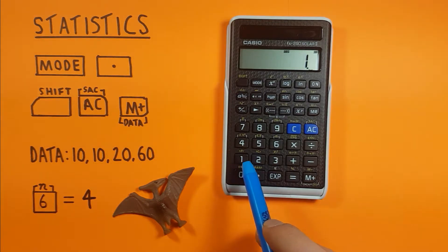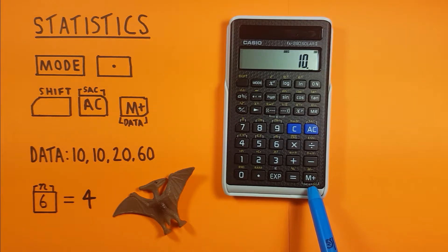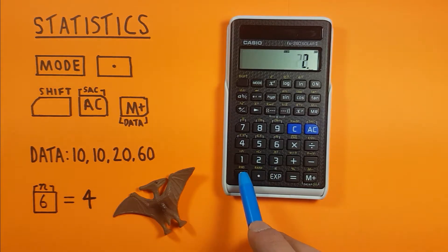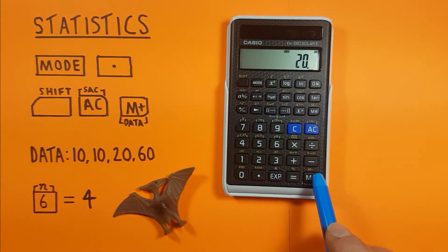We'll start by placing the 10 on the screen - that's our first number - and then the M plus key which adds a number to our data set. Press it once and since we have two in there we can just press it again. We've now entered both tens, and then 20, M plus, and 60, M plus.